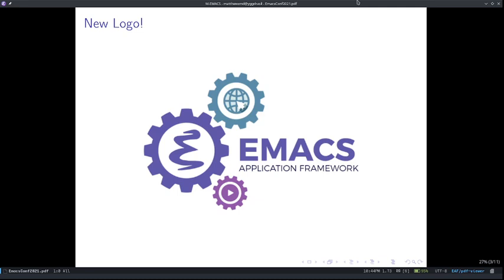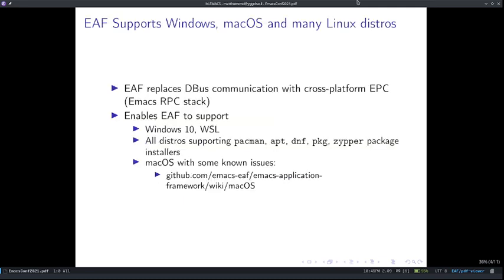The first change that you will definitely notice is that we have a new logo. This logo uses gear wheels to symbolize how EAF extends Emacs to web and multimedia applications that bring new possibilities to Emacs. Since last year, EAF has replaced the deepest communication technology with the cross-platform EMP stack, which has an Elisp implementation and a Python implementation — exactly what we need.